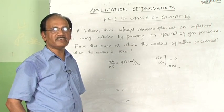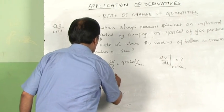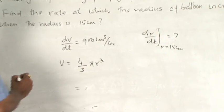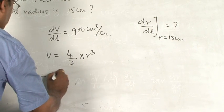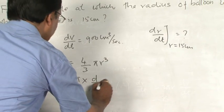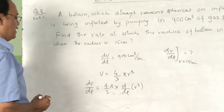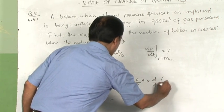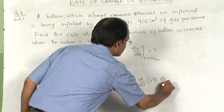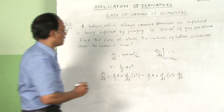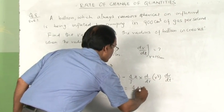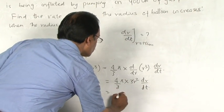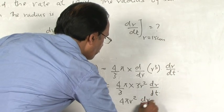The volume of a sphere is given by V = (4/3)πr³. Differentiating both sides with respect to t, we get dV/dt = (4/3)π times the derivative of r³ with respect to t. Using implicit differentiation, we first differentiate with respect to r, then multiply by dr/dt. This gives dV/dt = (4/3)π · 3r² · dr/dt, which simplifies to dV/dt = 4πr² · dr/dt.